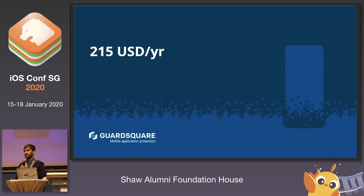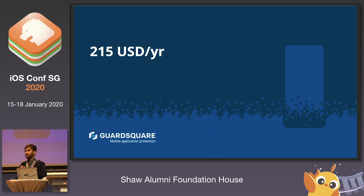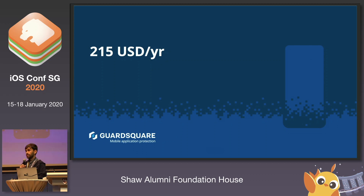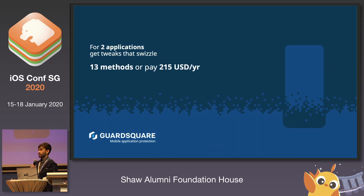$215 — that's the cost of a yearly subscription to YouTube Music and SoundCloud. On the other hand, I could choose to install some tweaks on my device to get free access to the premium features of these applications. Tweaks don't require any coding knowledge. There are even App Store-like alternatives making them easily accessible to the average iOS user. Under the hood, they're just libraries of code that swizzle some logic. So I have a choice: either get tweaks that swizzle 13 methods, or pay the full subscription. And that's just two apps.